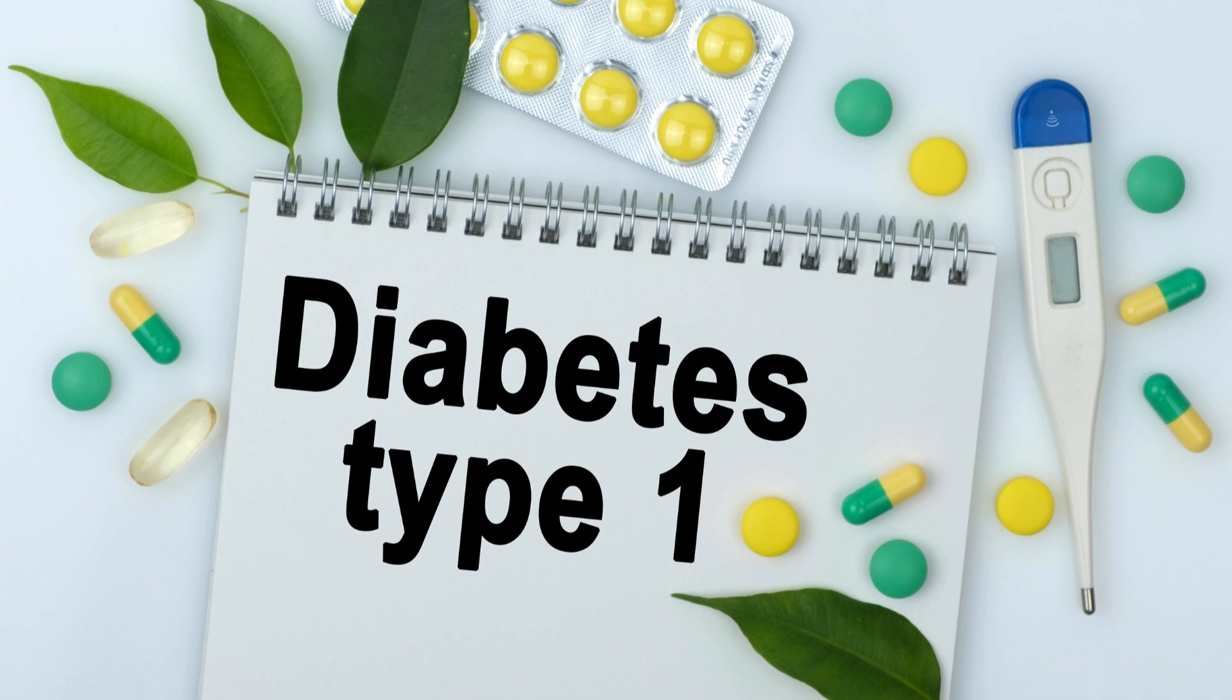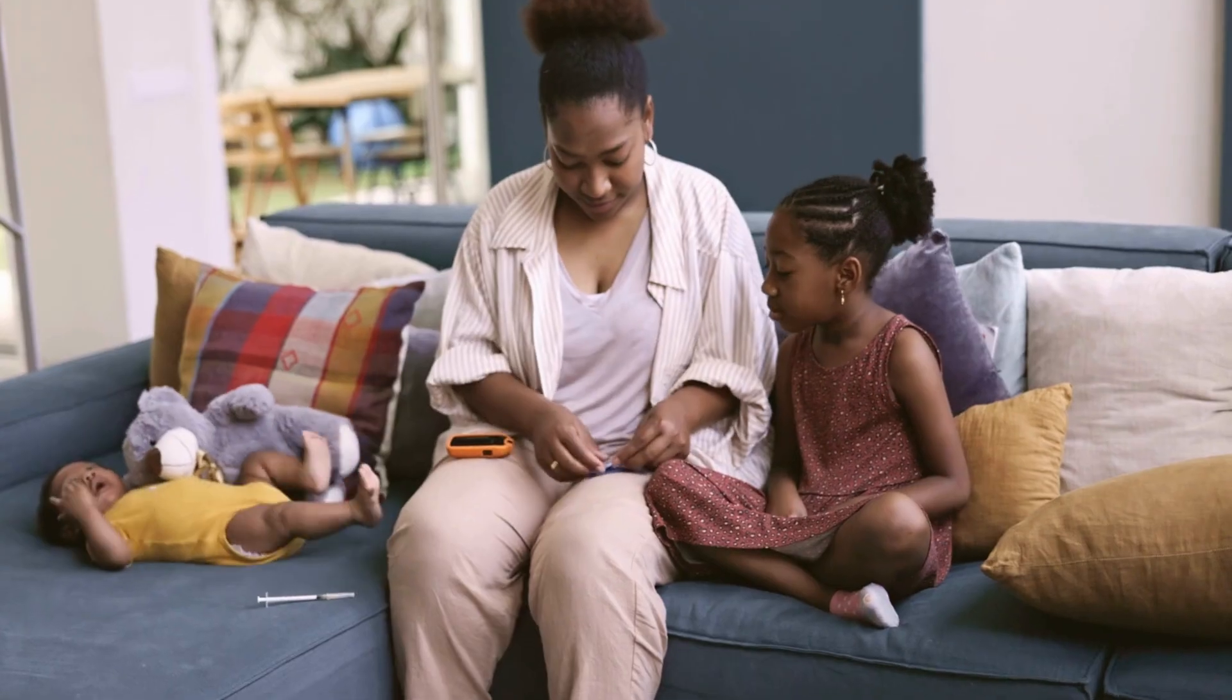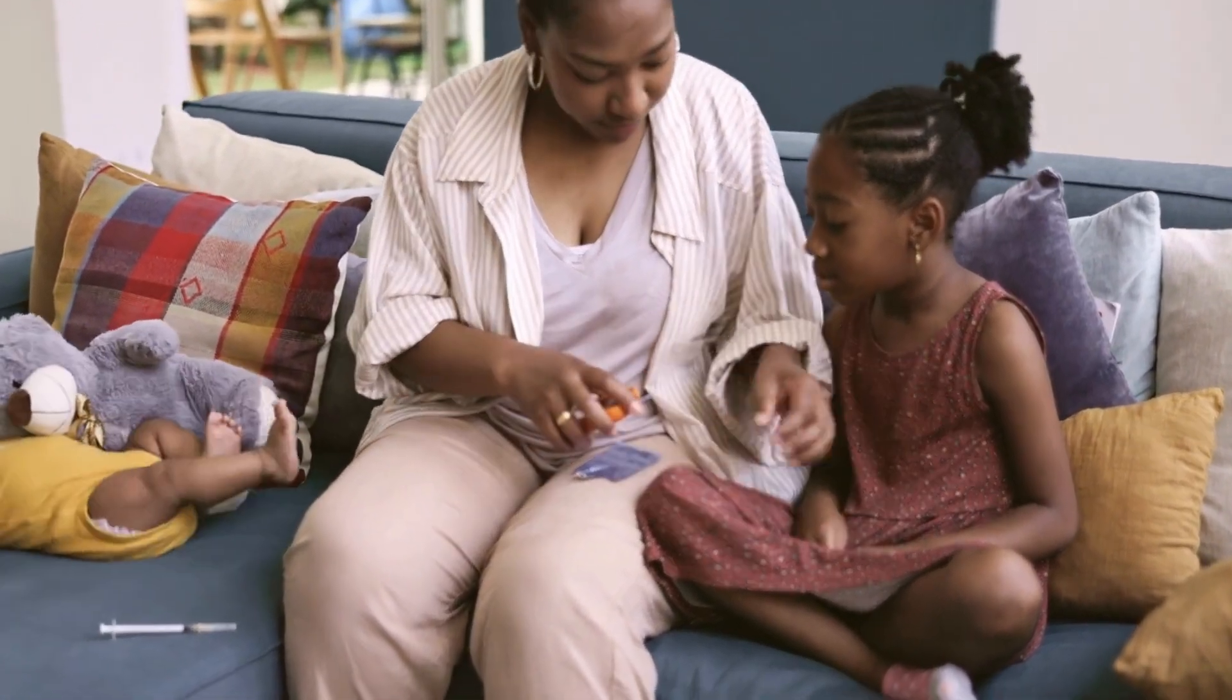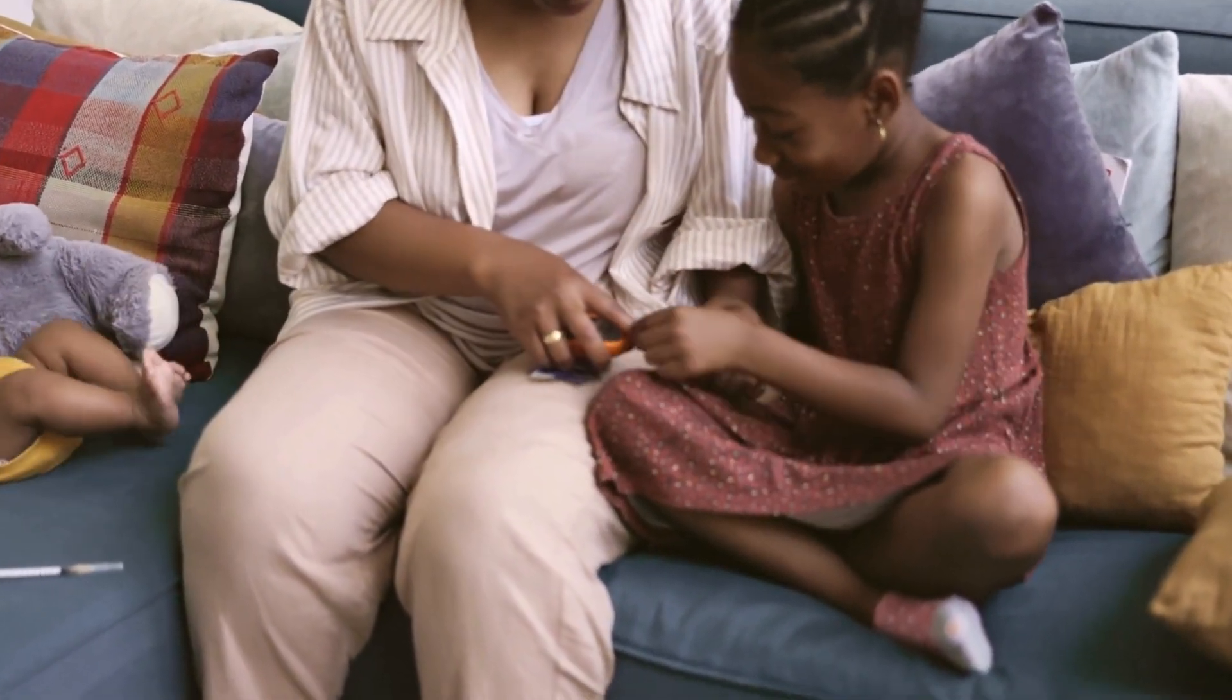So this is called type 1 diabetes. It is very common in younger age groups. Around 5 to 10 percent of diabetics are type 1 diabetes, and they have to be on insulin to survive.